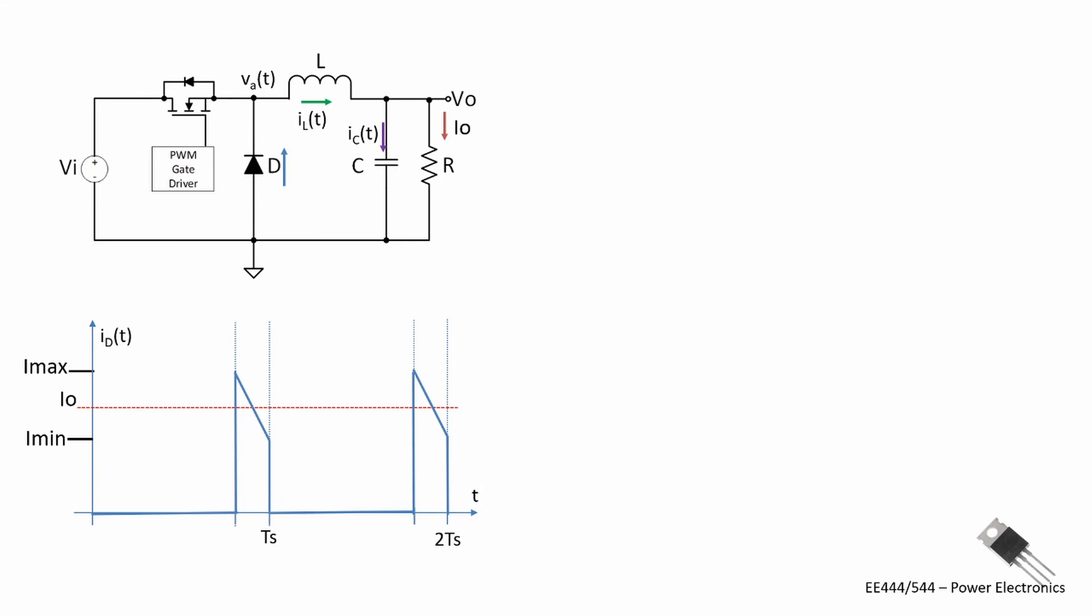We also have conduction loss through the diode. And I'm going to ignore the ripple for a moment. And our loss in the diode is approximately equal to our average times the forward drop of the diode and because it's only conducting over one minus the duty cycle, we factor it by one minus D.